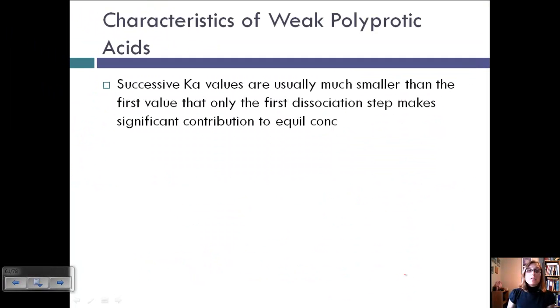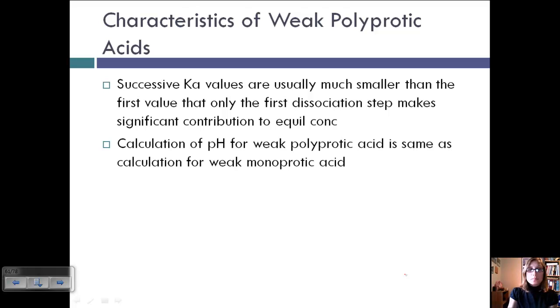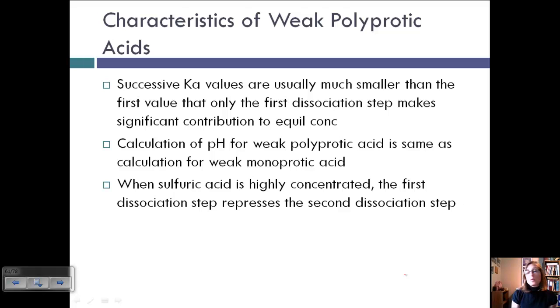So in general, successive Ka values are usually much smaller than the first, so that only the first dissociation step makes a significant contribution to the equilibrium concentration. We saw that in example one and example two. The calculation of the pH for a weak polyprotic acid is the same as the calculation for a weak monoprotic acid because we break it into steps. Although when we're looking at a strong polyprotic acid like sulfuric acid, if it's highly concentrated, the first dissociation step is going to basically repress that second step.